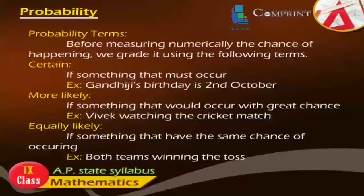Probability Terms. Before measuring numerically the chance of happening, we grade it using the following terms. Certain: If something must occur. Example: Gandhiji's birthday is 2nd October.